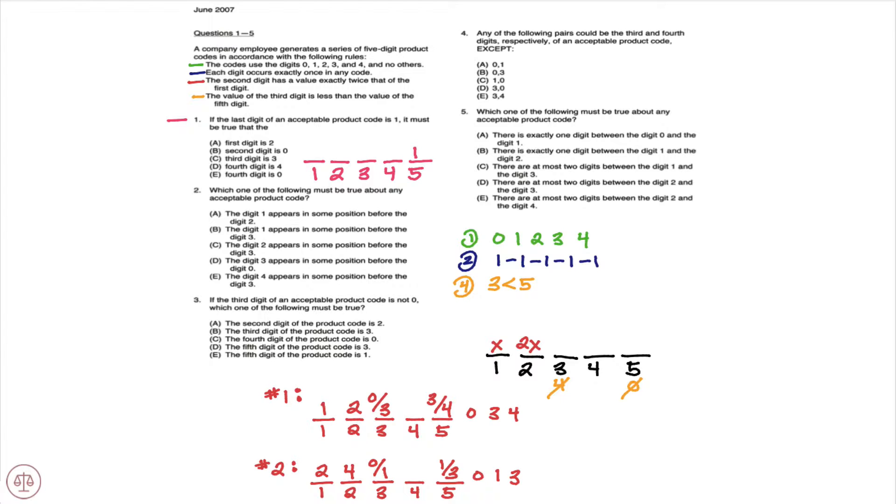Well, if the last digit is 1, we know for certain that we are going to be in scenario 2 because 1 in scenario 1 is appearing first.